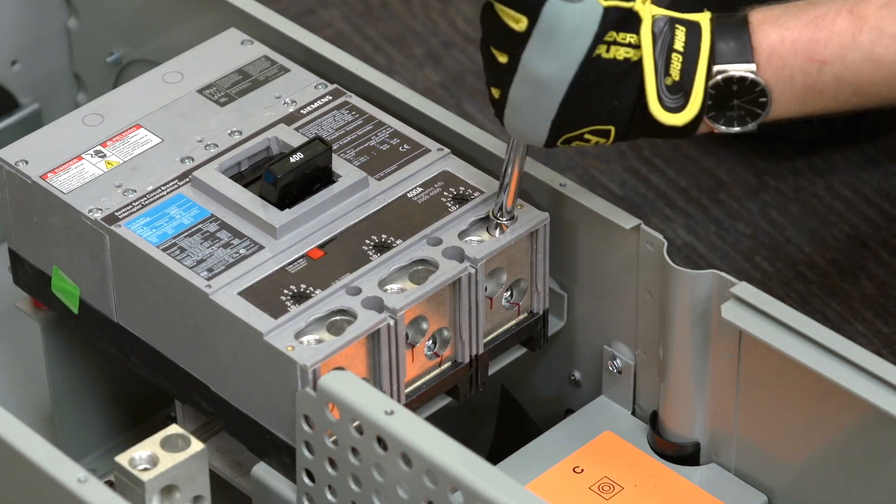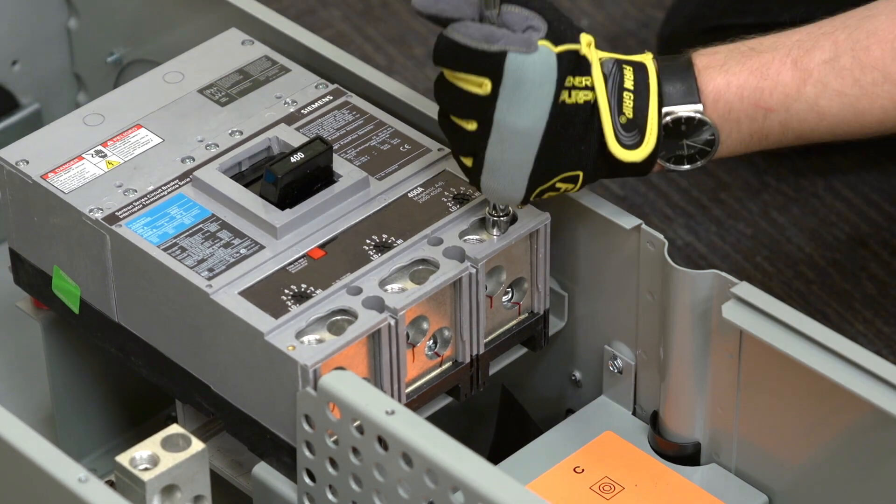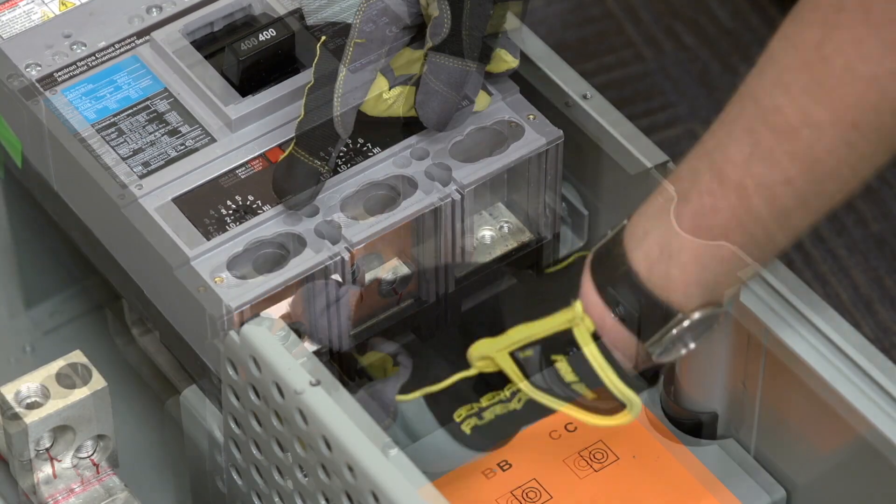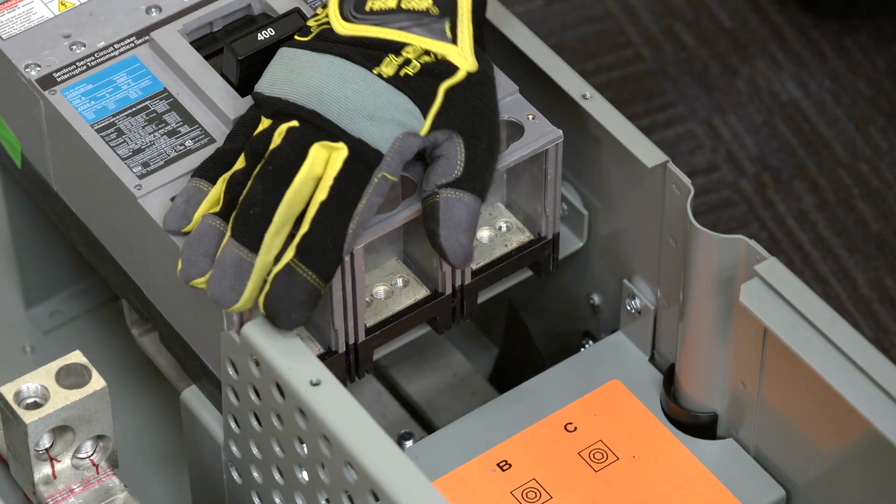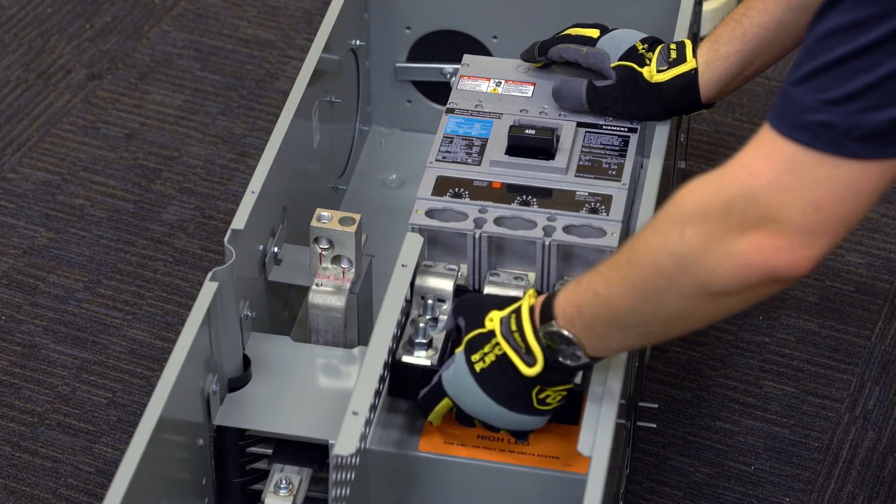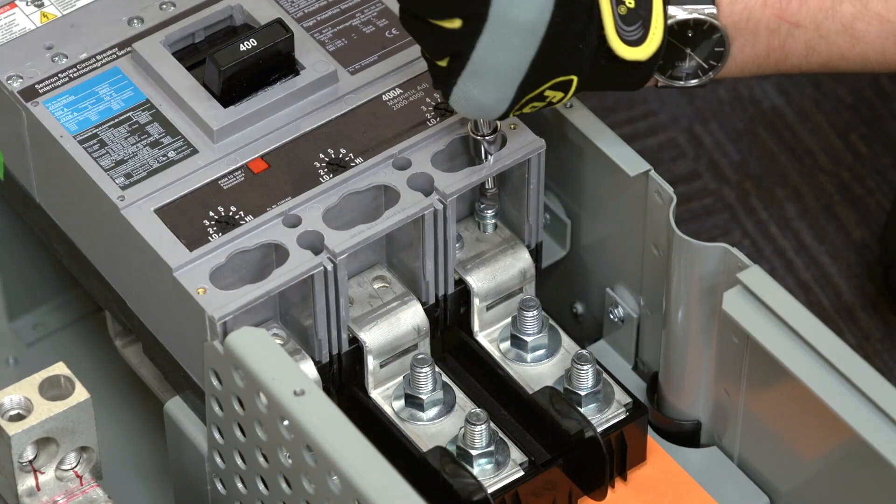One tip to keep in mind when installing a lug landing pad is to perform this installation when the module is lying on its back on a flat surface prior to hanging the module on the wall. This makes unscrewing the tightly torqued screws easier. It may take a strong power tool or a tool with an extended handle to perform this action.